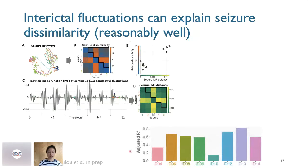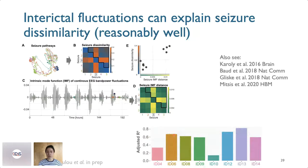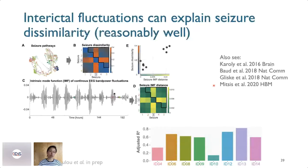Repeating this across just over a handful of patients, in most patients the interictal IMFs achieve a reasonable explanation of seizure dissimilarity. Not everything is explained perfectly, but there is clearly something already contained in this interictal data. Other researchers have investigated other features and properties, and I think there is really something to be gained from looking at these long-term recordings in a continuous fashion.